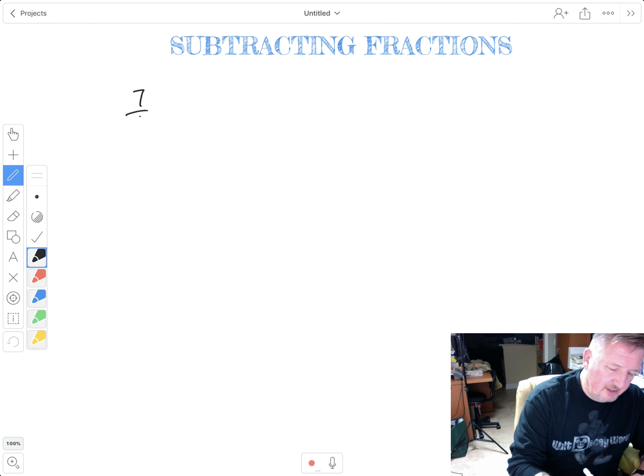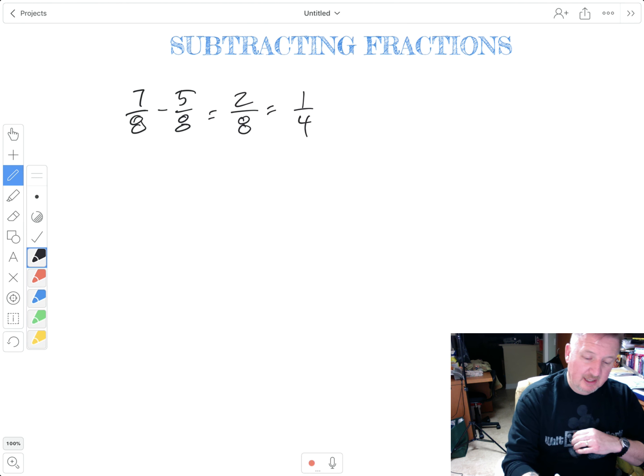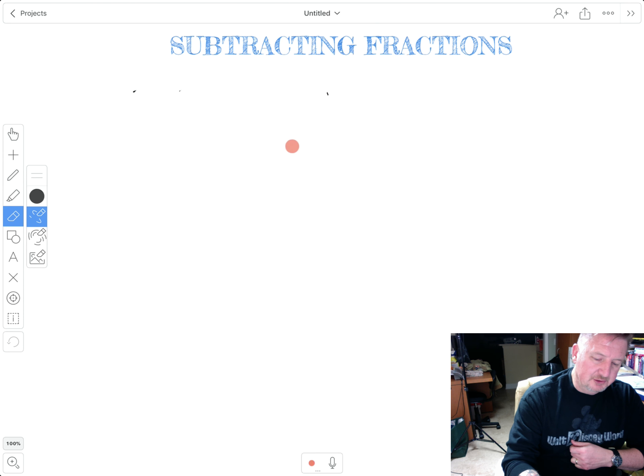Let's say I got seven eighths and I want to subtract five eighths. Basically, the bottom stays the same and I just subtract five from seven, which is two. That can be simplified to one fourth. And that would be my final answer. So there's not much to, I'm not going to spend a lot of time on that. That's not real difficult to do.